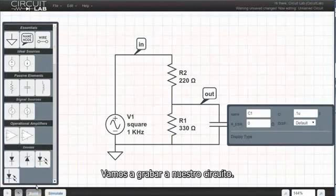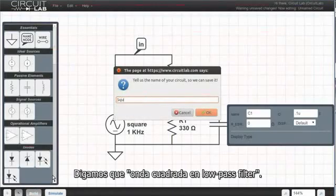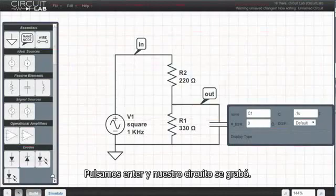Let's go and save our circuit. Hit control S, and it asks for a name. Let's say square wave into low pass filter. Hit enter, and it tells us that our circuit was saved.